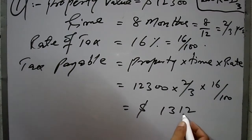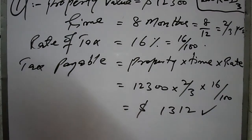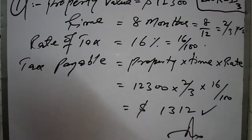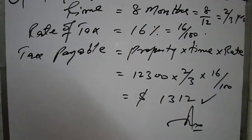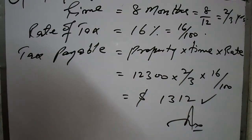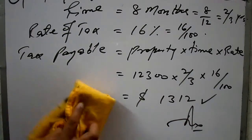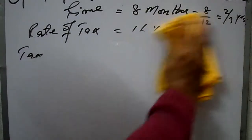After simplification you will get $1,312. That is your required result. Similarly, read the statement of question number two: how much does a customer have to pay for an article costing $240 with five percent GST imposed on it? GST means General Sales Tax.